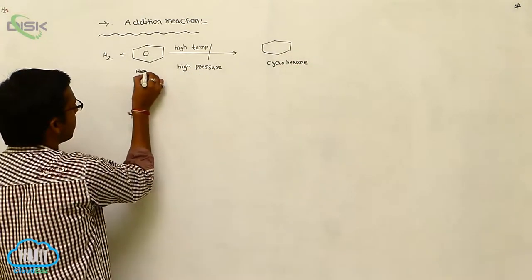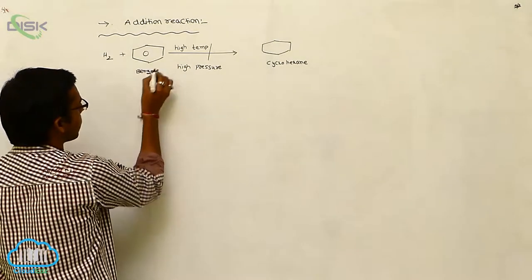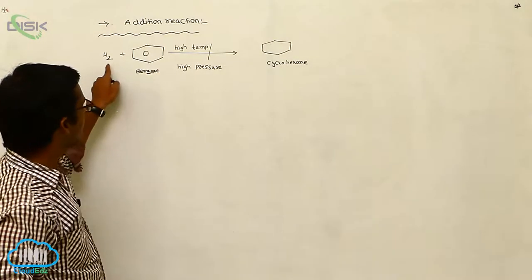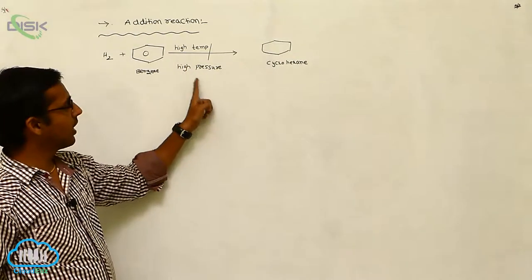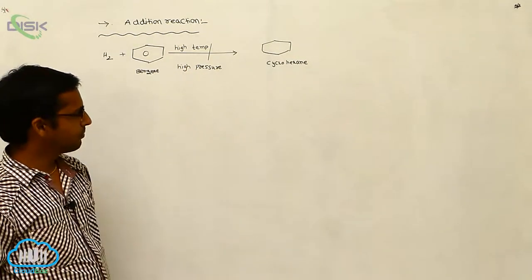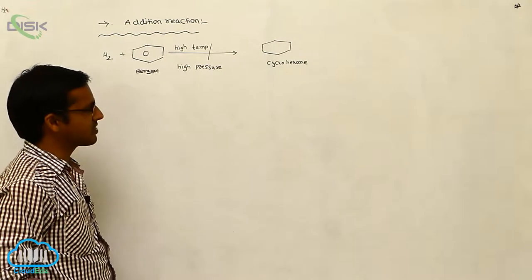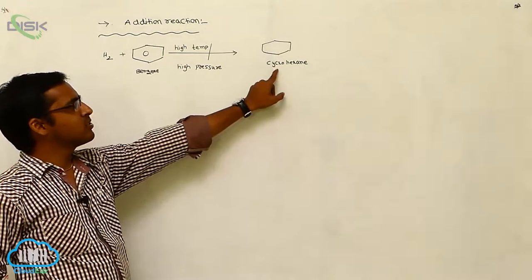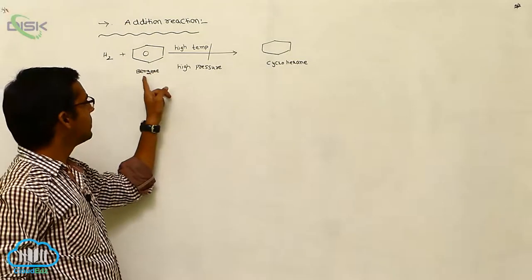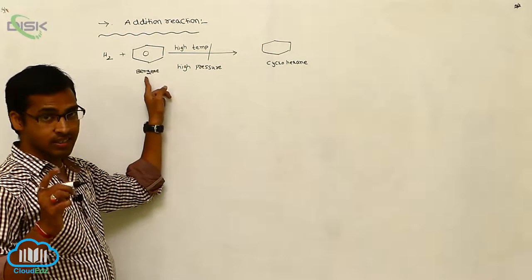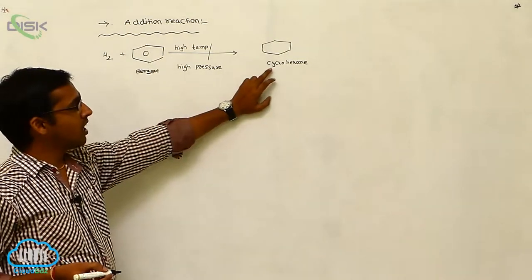Benzene is converted to cyclohexane through addition of H₂ in the presence of high temperature and high pressure. Cyclohexane is a saturated hydrocarbon, whereas benzene is an unsaturated hydrocarbon.